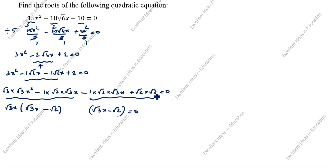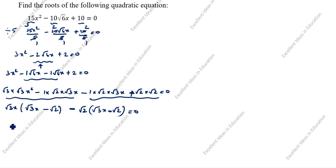In the second pair, √2 is common, so we take √2 outside. Here √3·x appears in both brackets. Note the sign: plus here means minus into minus gives plus, so it comes minus. We get (√3·x minus √2)(√3·x minus √2) equals 0.